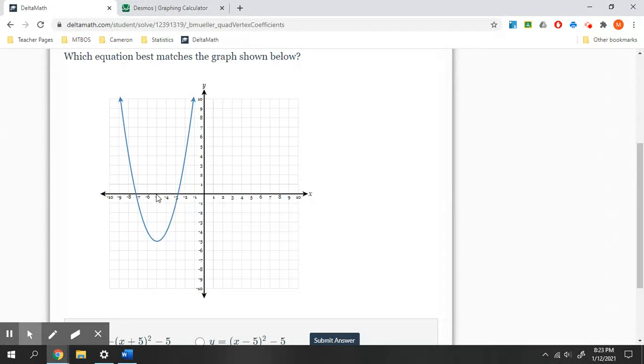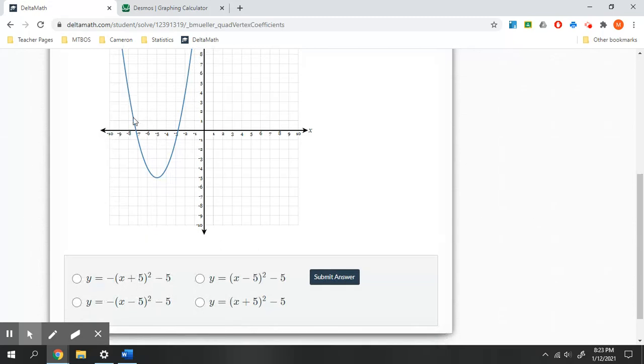Left 5, down 5. This is concave up, facing upwards. So we know our a needs to be positive. So left 5, down 5, concave up, that would be this solution.